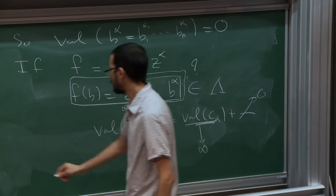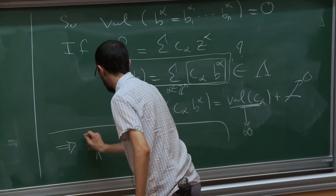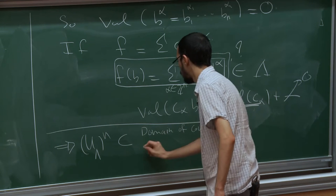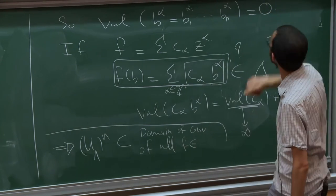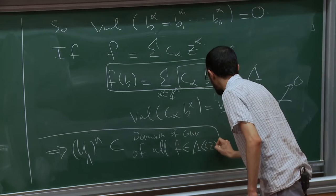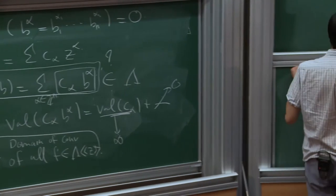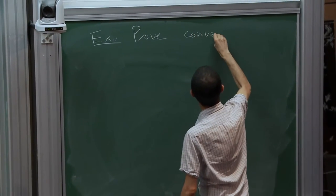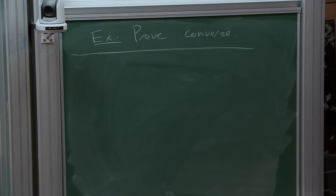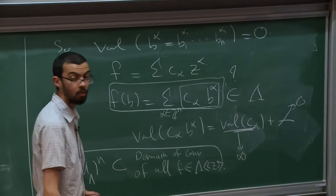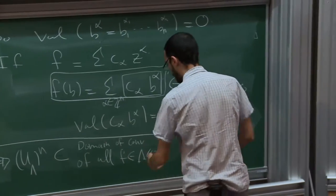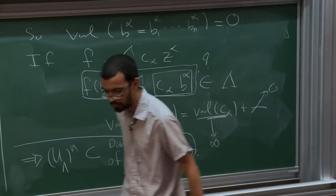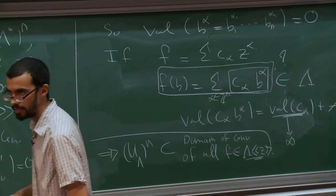The exercise is to prove the converse: if you take a point not in U_lambda, then you can find one of these series — an f in the ring — so that this evaluation doesn't make sense. You get infinitely many terms whose valuation doesn't go to infinity, so you can't add them up.